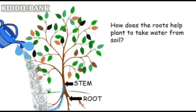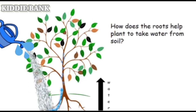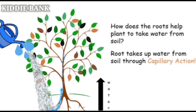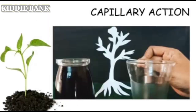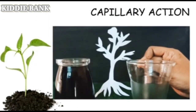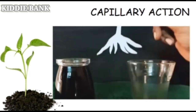The plant takes water from soil using roots. When we water the plant, the water moves upward from the root towards the stem and leaves of the plant. The movement of water upwards from the root to the stem and leaves is called capillary action. Plants take water from the soil using capillary action. Let's see how it works for the plants.